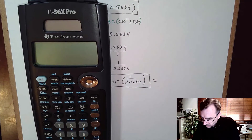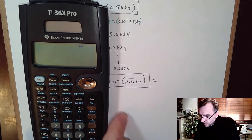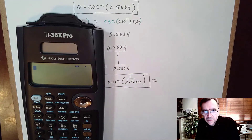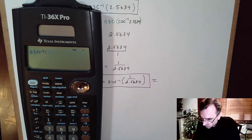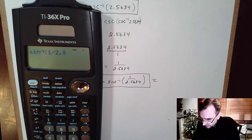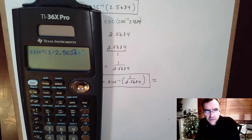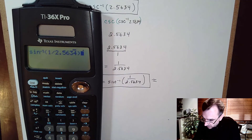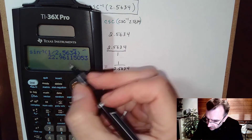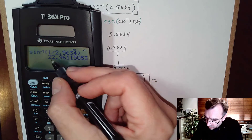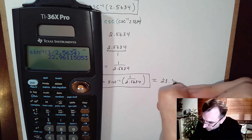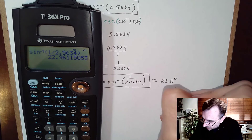On the calculator, to find cosecant inverse of 2.5634, type sine inverse of 1 over 2.5634 and hit enter. I get approximately 22.96, which rounds to 23.0 degrees — I include the trailing zero to show proper rounding.